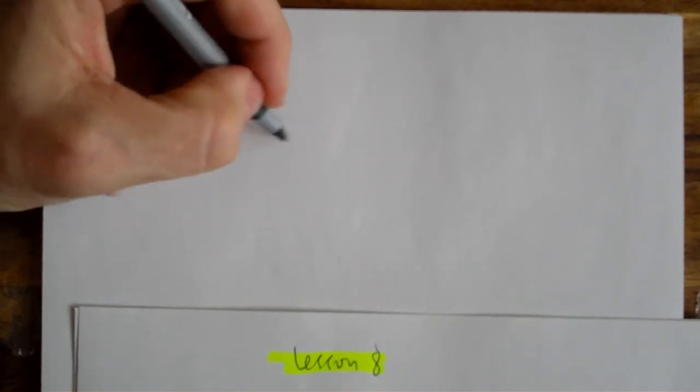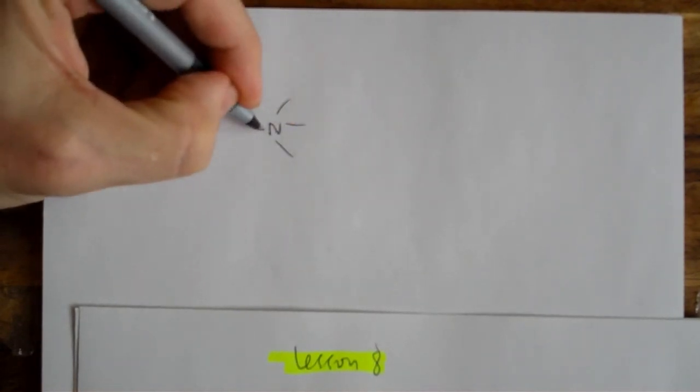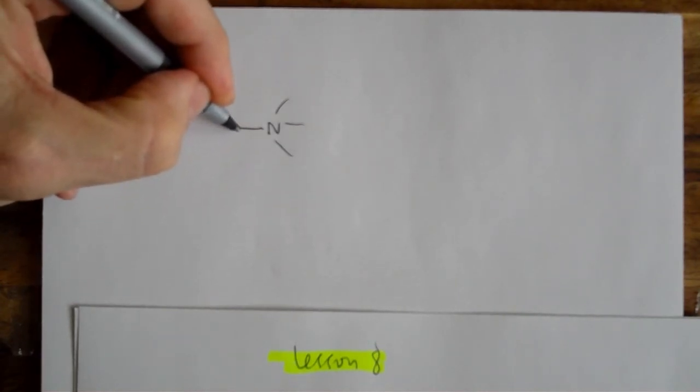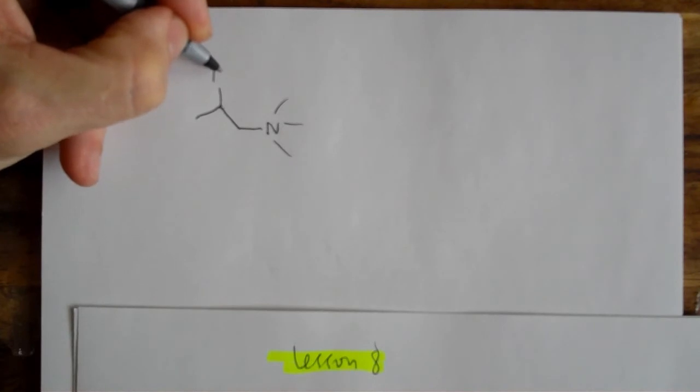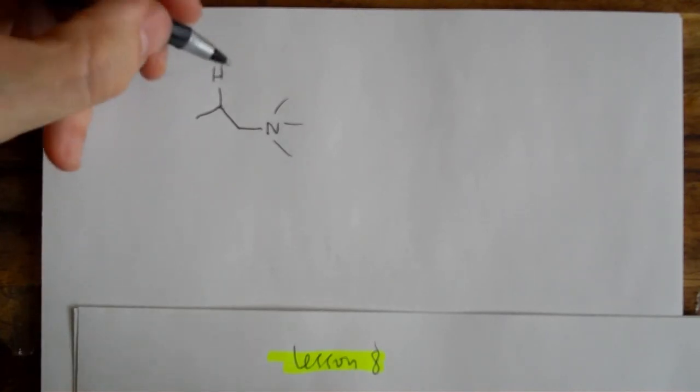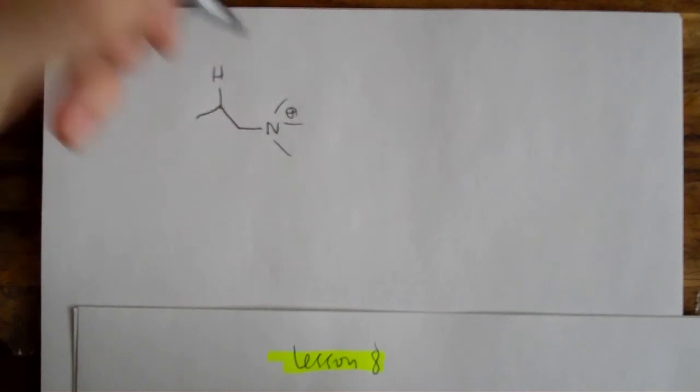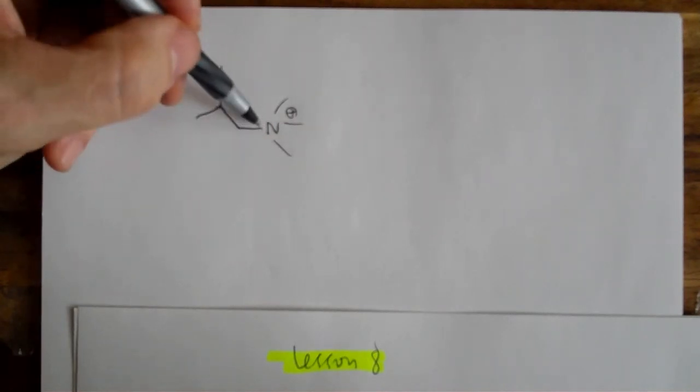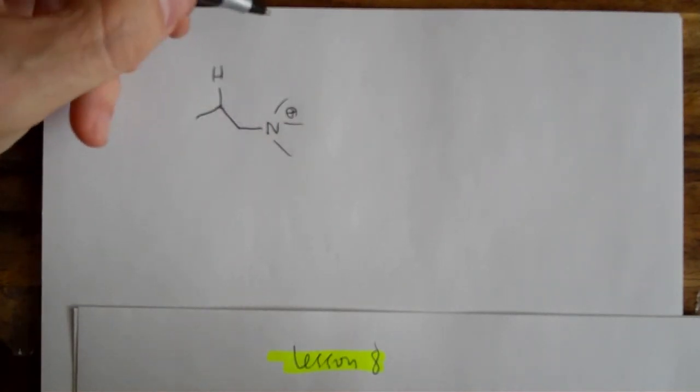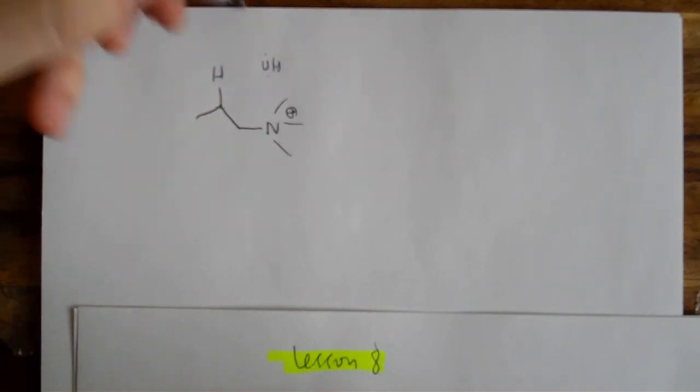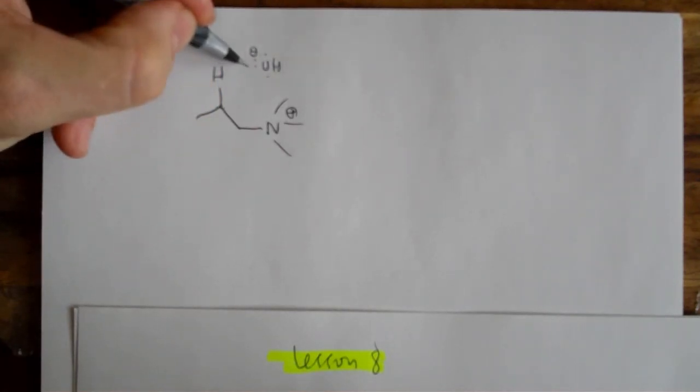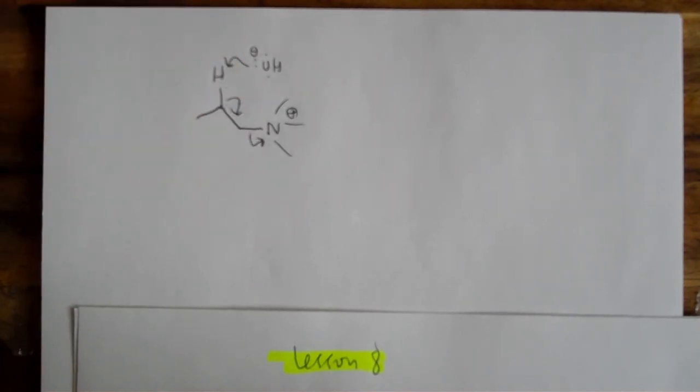And then the last point is eliminations. And that is if you have a beta hydrogen and a quaternary ammonium, then you can get eliminations. And this is going to happen through hydroxide.